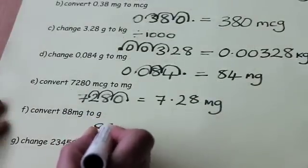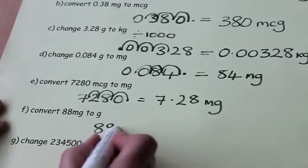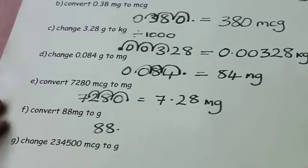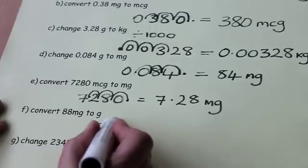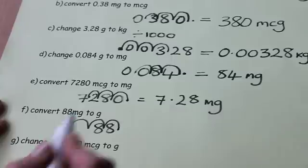Once again, there is no decimal point, and so I'm going to put it here at the end of the number. And I'm dividing, and so I'll go back three places. One, two, three, to the left.